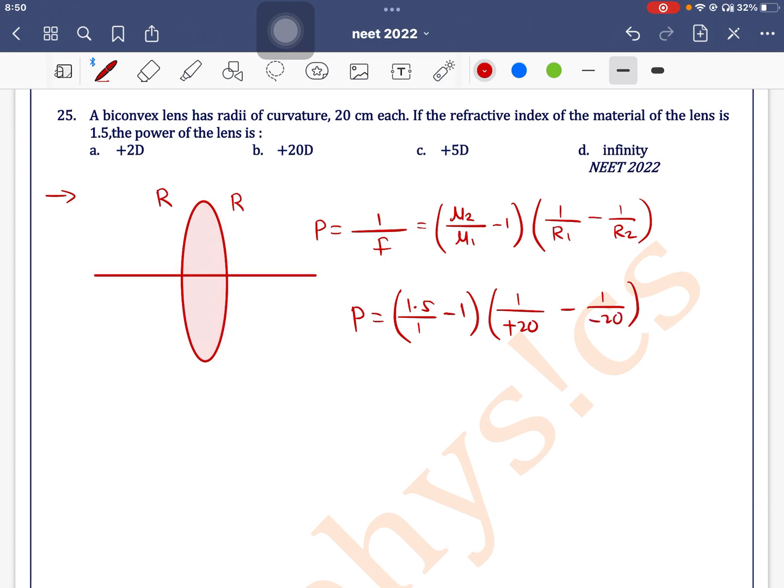Which is equal to 1.5 minus 1 is 0.5 into 20 plus 20 divided by 400, which is equal to 1 by 2 into 40 divided by 400. This cancels out, so this is 10.